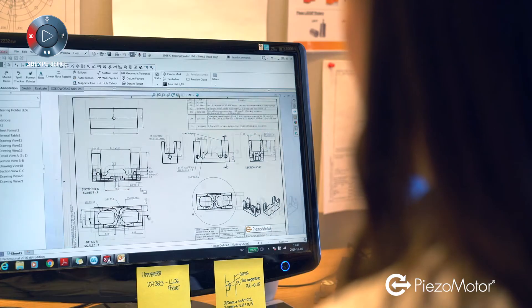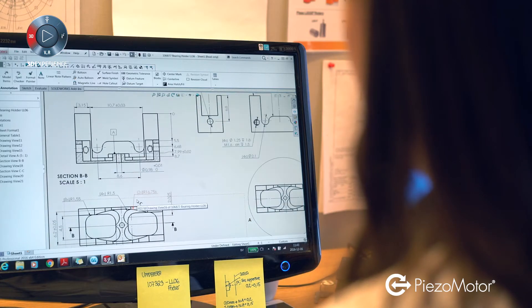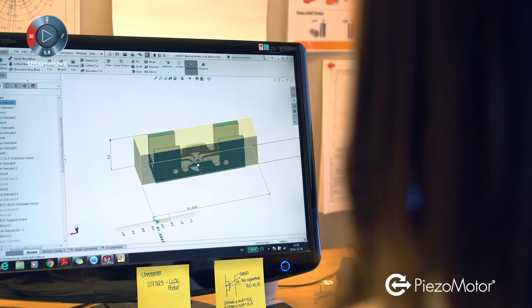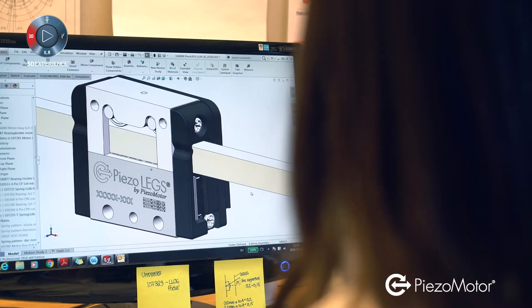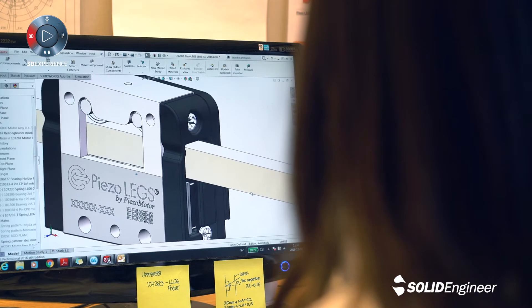Piezzo Legs technology takes off where conventional DC motors give in, making it possible to operate in challenging environments. The ability to nanoposition is characteristic for our technology, but customers come to us also for the smooth motion and for the non-magnetic properties.